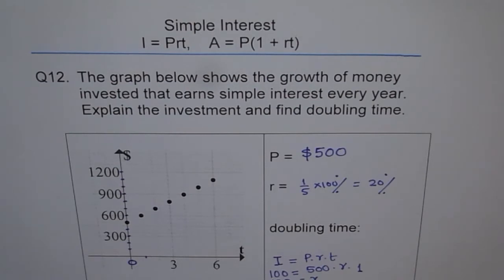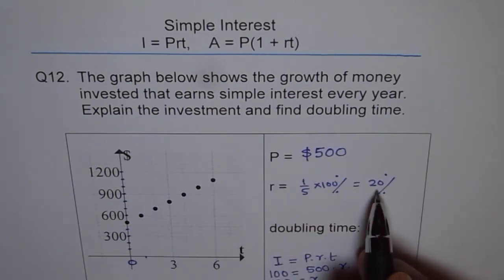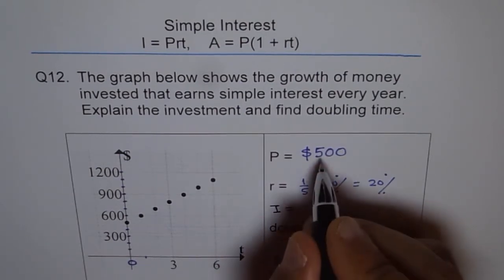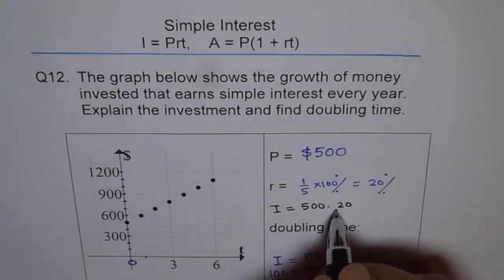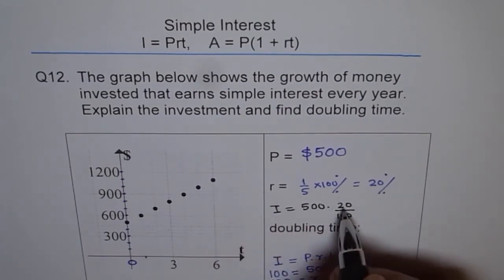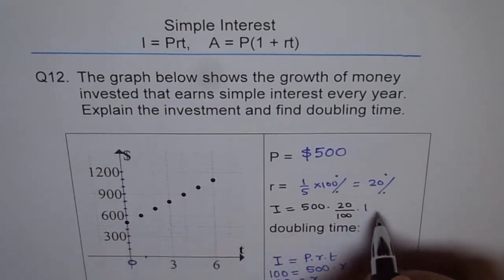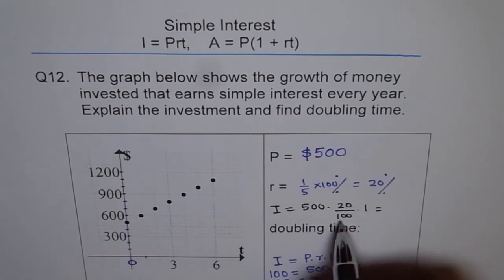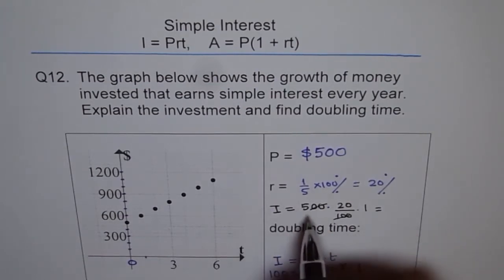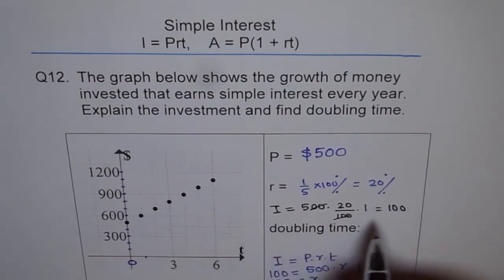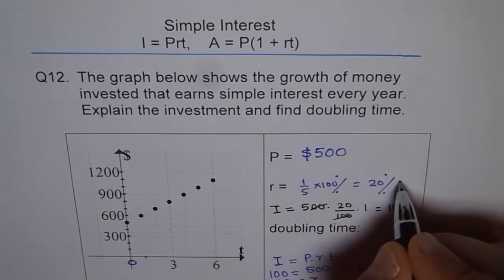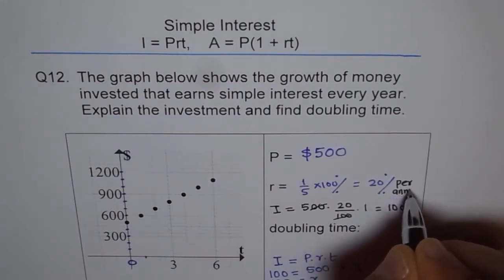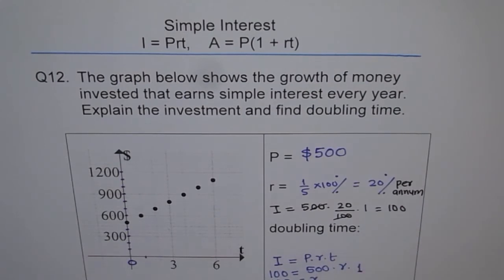Let's verify: Interest = P × R × T = 500 × (20/100) × 1. So 500 divided by 100 is 5, times 20 equals $100. We get interest of $100 per year, which confirms the rate is 20 percent per annum.